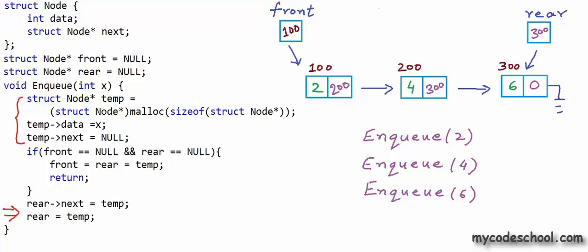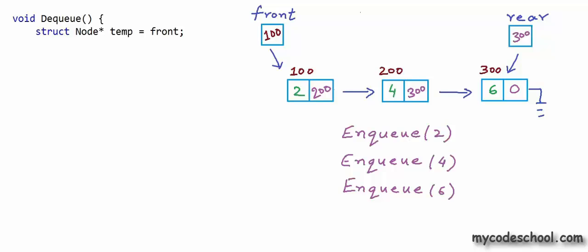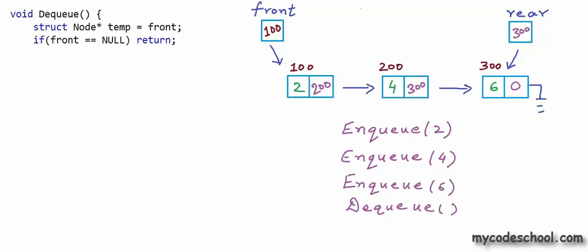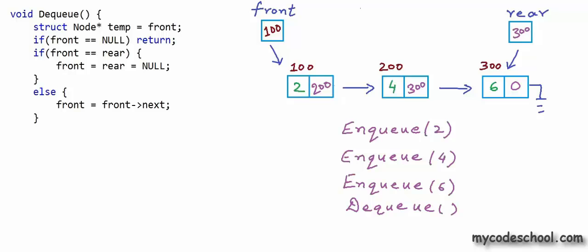Now let's write the dequeue function. In dequeue, we first create a temporary pointer to node storing the address of the current front. There are a couple of cases: if the queue is empty, we print an error message and return — we can check if front is null. If front equals rear (only one element), we set both front and rear to null. In all other cases, we simply set front to front->next.